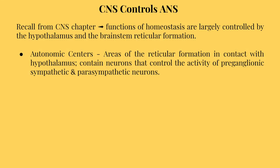Functions of homeostasis are largely controlled by the hypothalamus and the brainstem reticular formation. The hypothalamus sends signals to areas of the reticular formation called autonomic centers, which contain neurons that control the activity of preganglionic sympathetic and parasympathetic neurons.